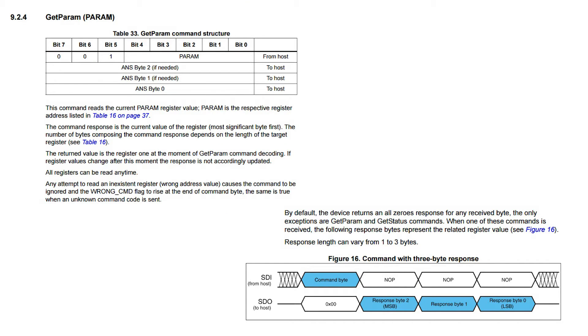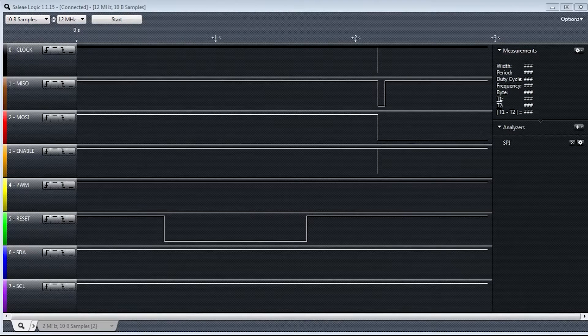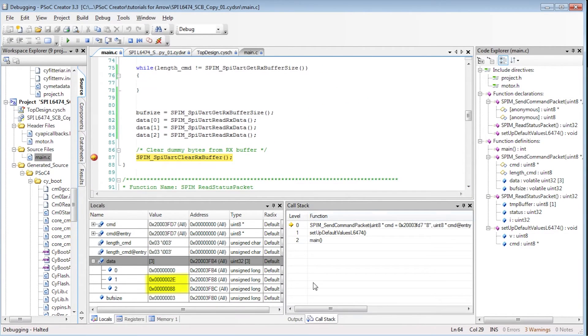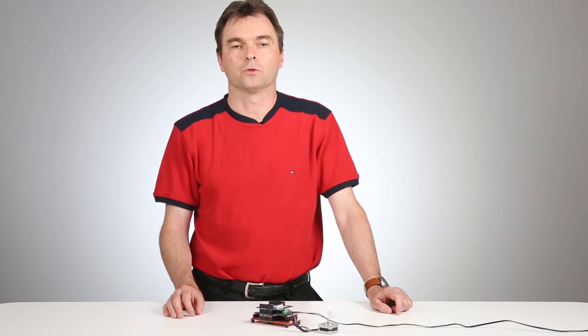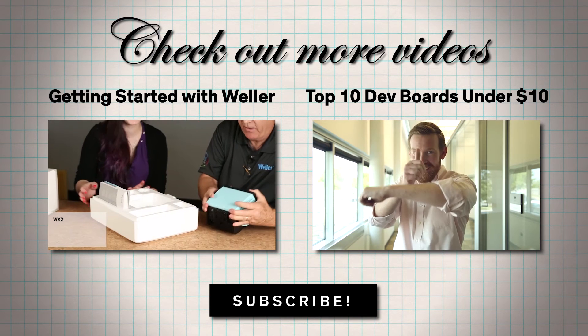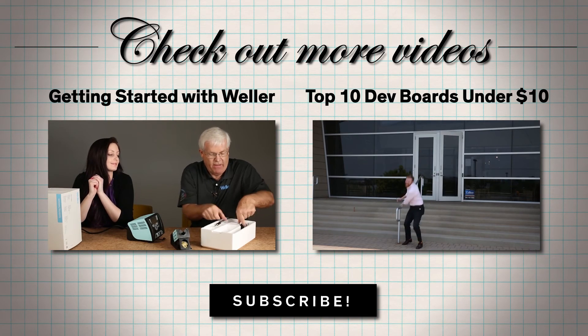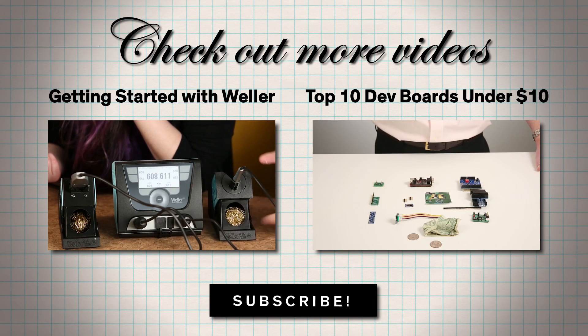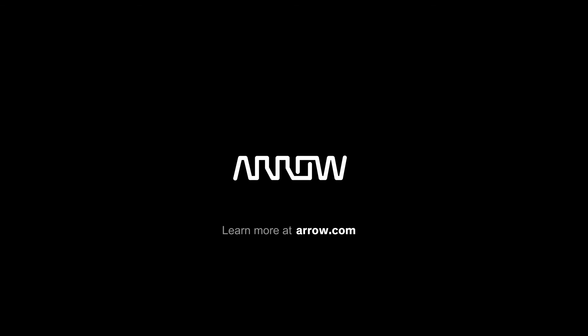Following the L6474 specifications, we send the byte 38 that corresponds to the function getParam of register 18. Then, two null functions to receive the two bytes of the configuration register. The logic analyzer shows the right exchange of packets and in debug mode, we will receive 2E88. The SPI bus works as expected and the PSOC communicated with the motor driver L6474.